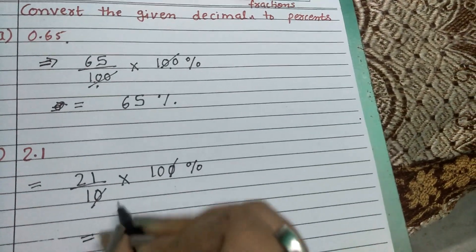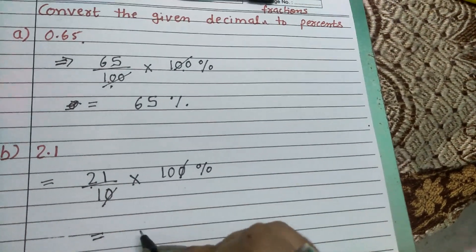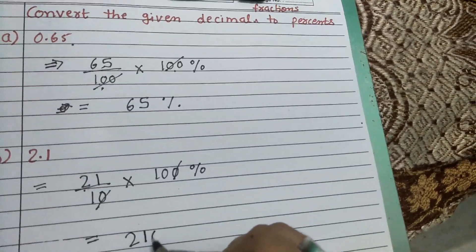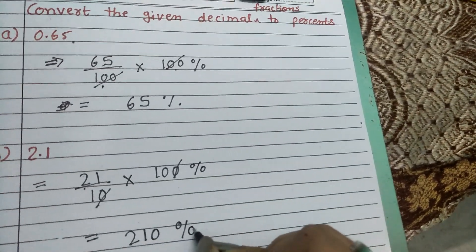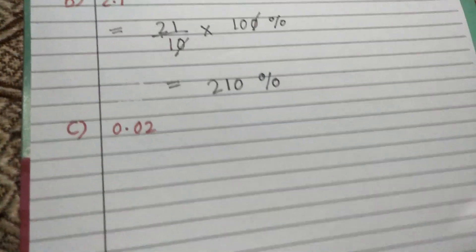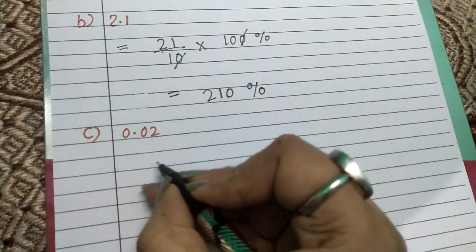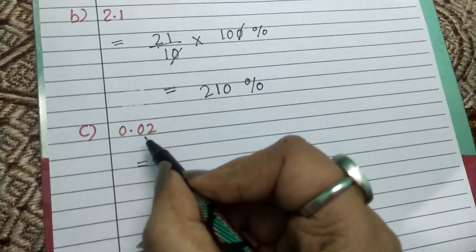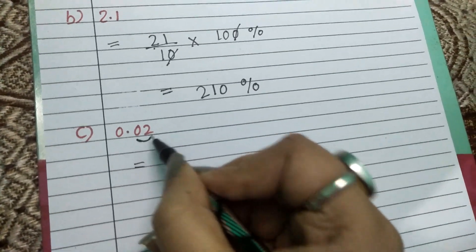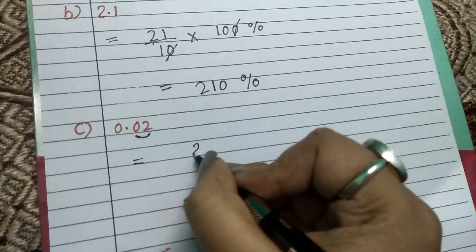Now 21 multiply 10 is 210, so here our answer is 210 percent. Next number is 0.02, and here again the decimal is on the hundredth place.